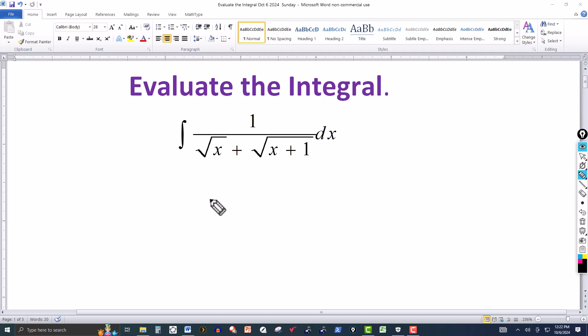So I'm multiplying the numerator and the denominator by the square root of x minus the square root of x plus 1. In the numerator, we're just getting that result. So it'll be the square root of x minus the square root of x plus 1, dx.